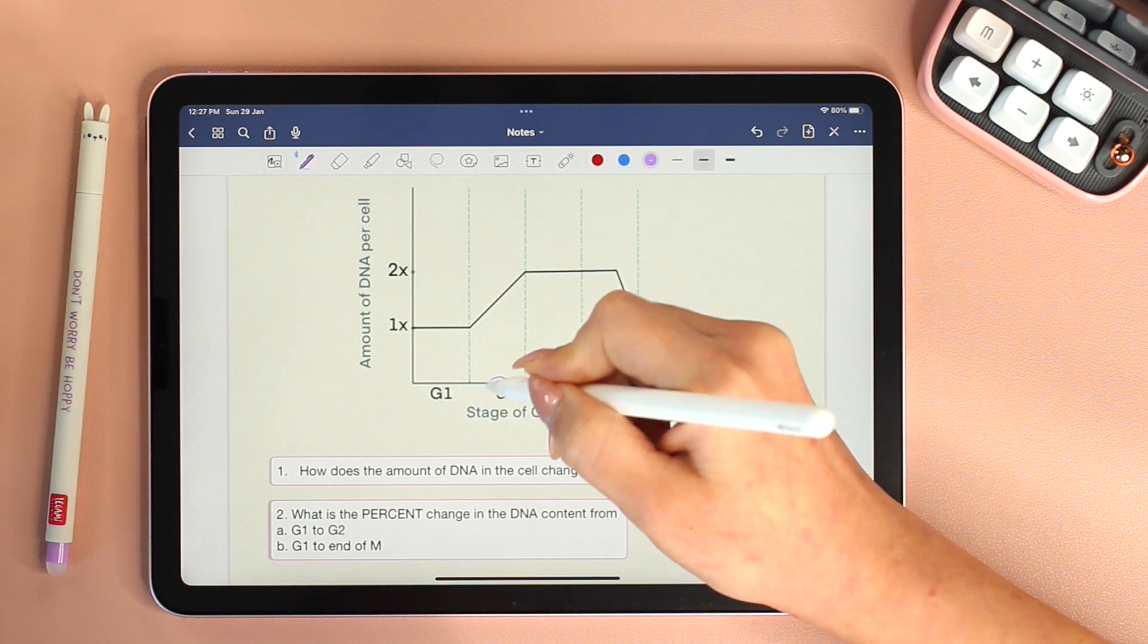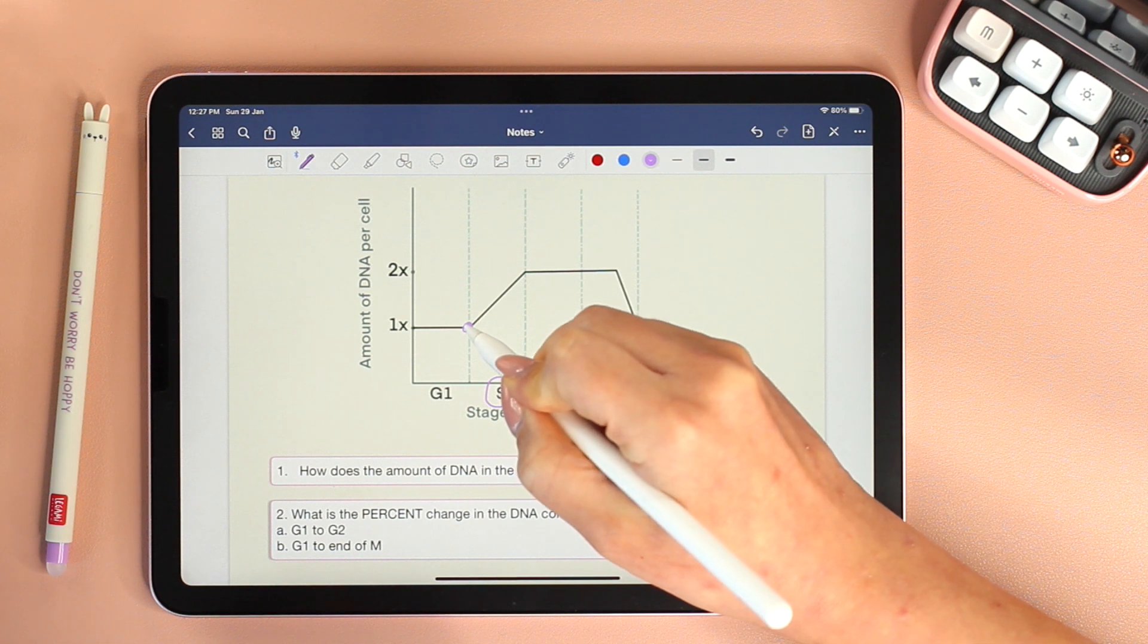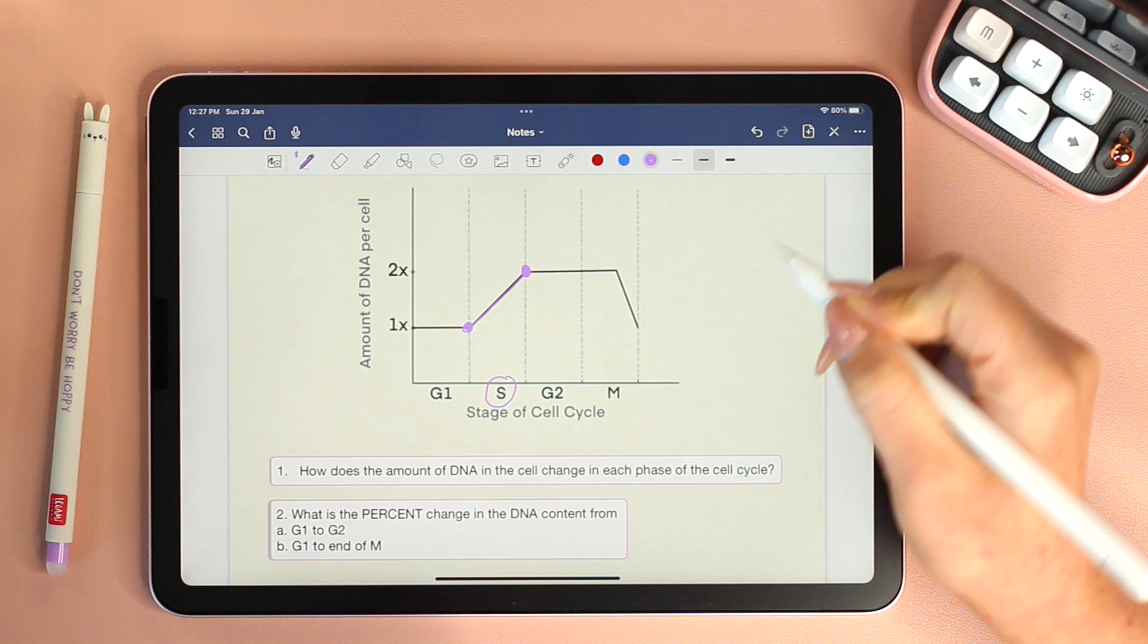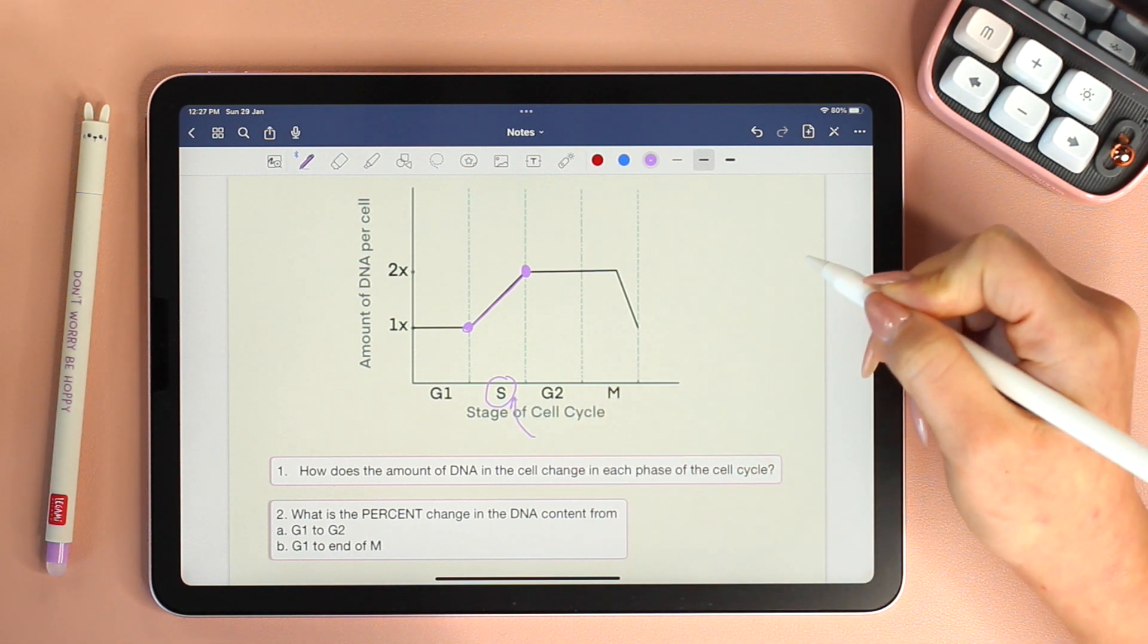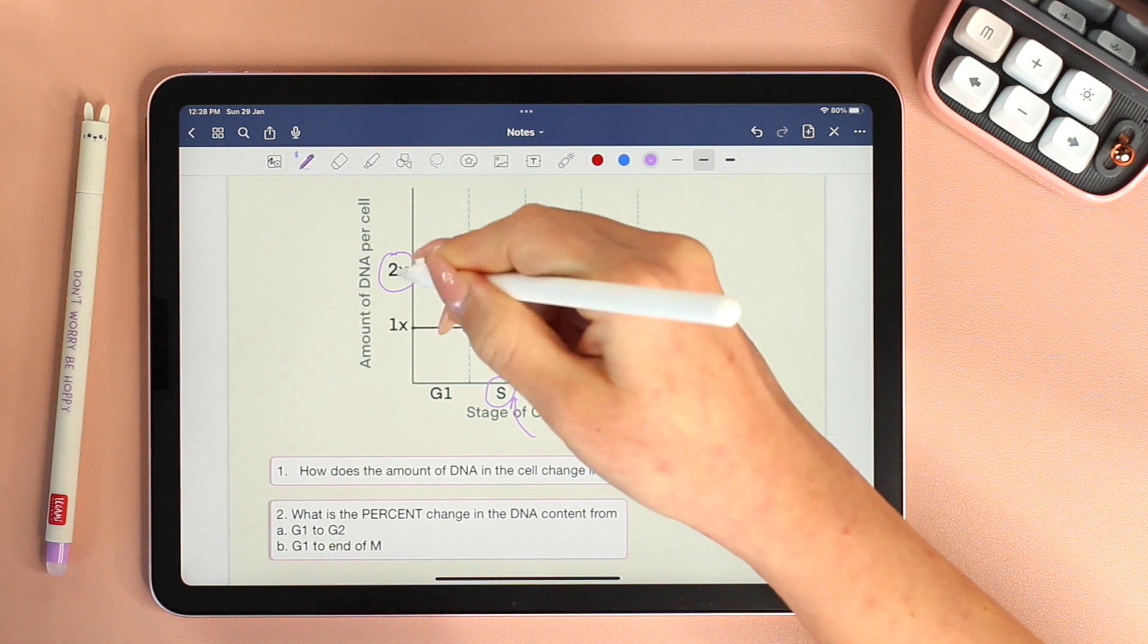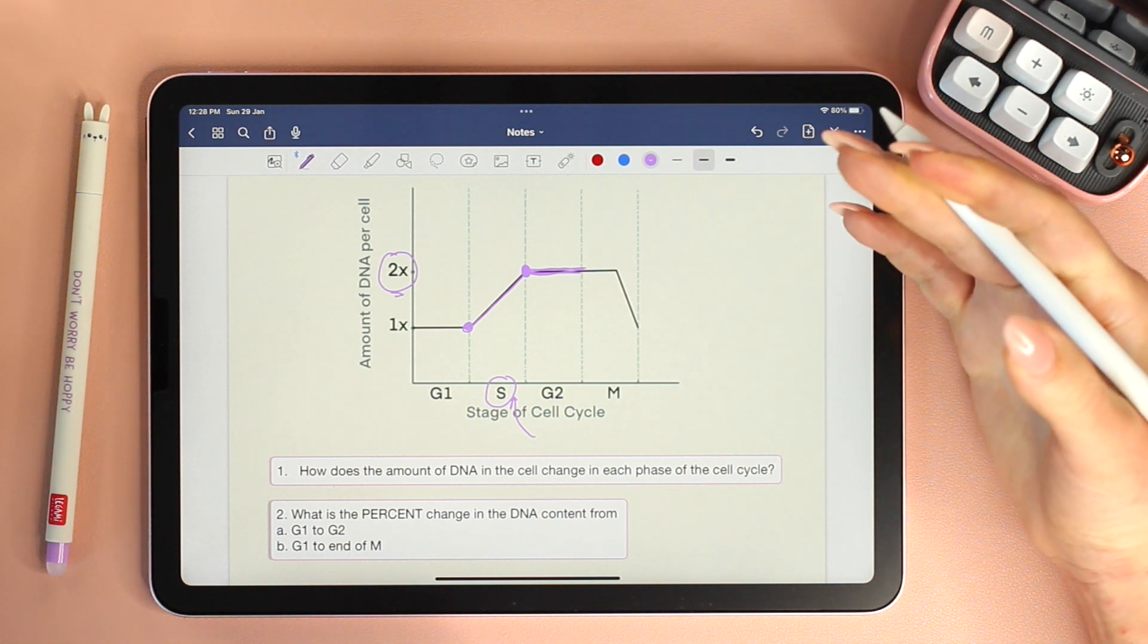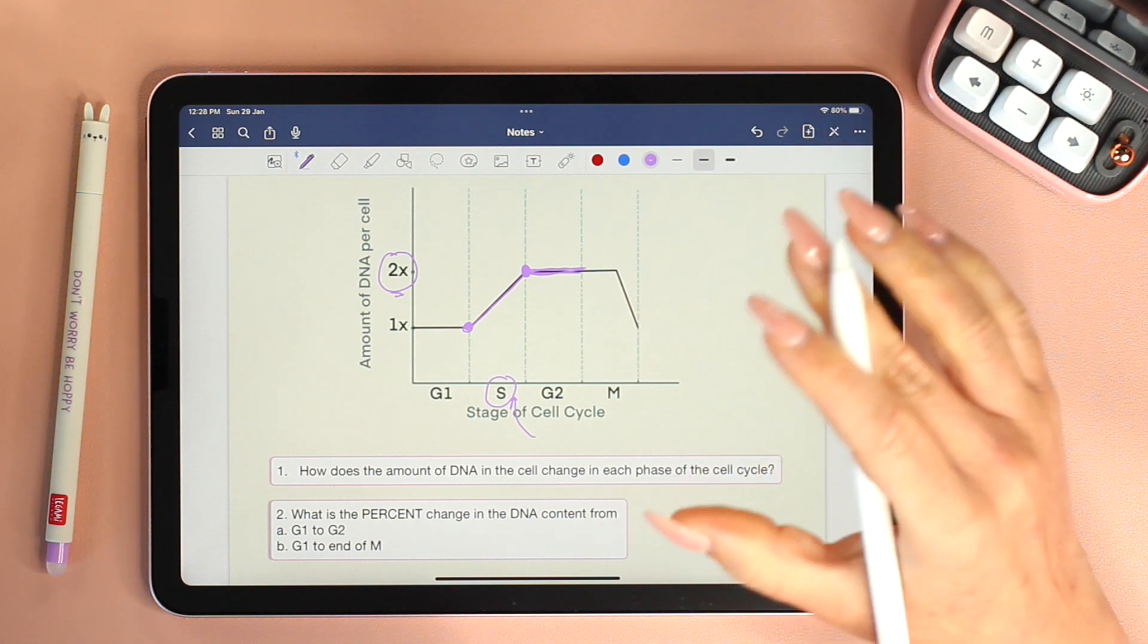However, once we go to the S phase, we can clearly see that the amount of DNA had went up from 1x to 2x. Why? Because it is during this stage that DNA replication takes place. All throughout the G2 phase, the amount of DNA stays constant at 2x. Because in the G2 phase, nothing is really happening. There's no division just yet.